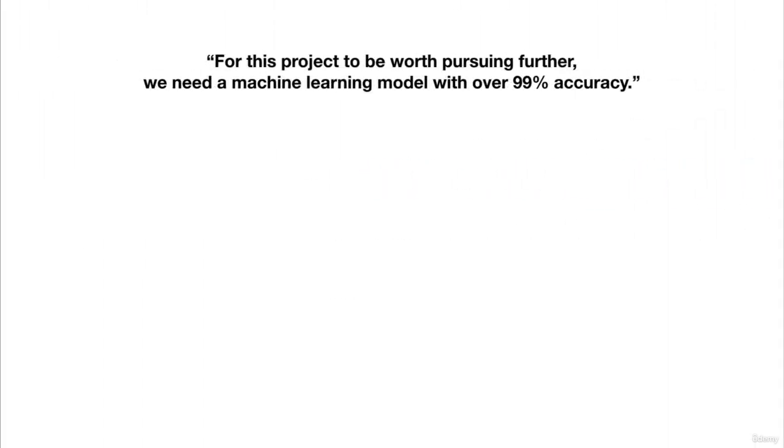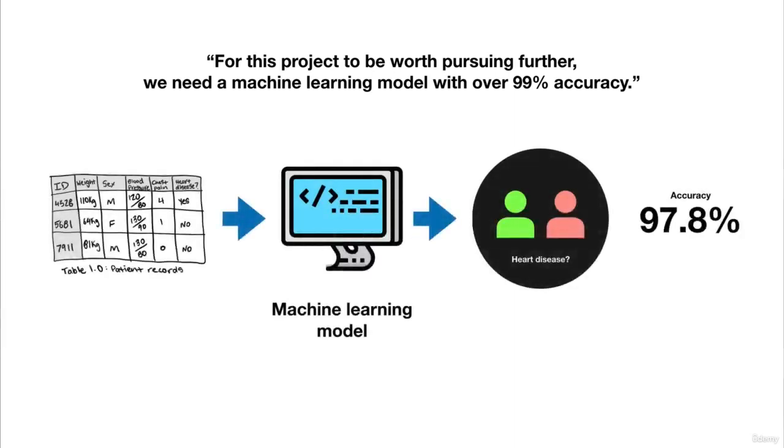For example, if your problem is to use patient medical records to classify whether someone has heart disease or not, you might start by saying, for this project to be valuable, we need a machine learning model with over 99% accuracy. Because predicting whether or not a patient has heart disease is an important task. So you'll want a highly accurate model.